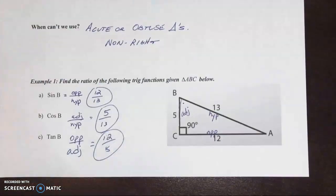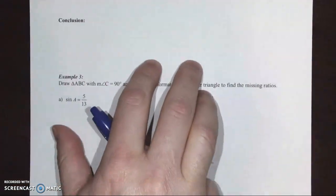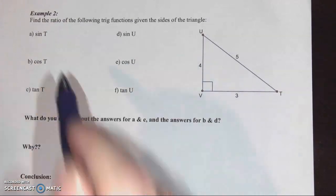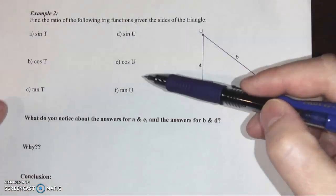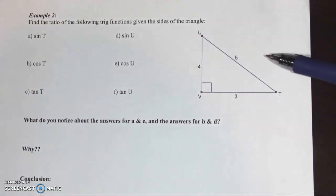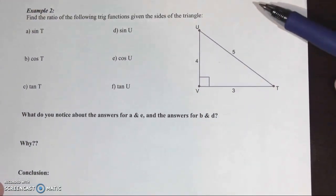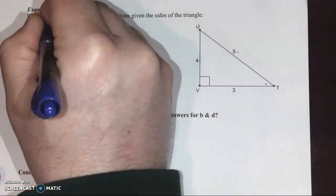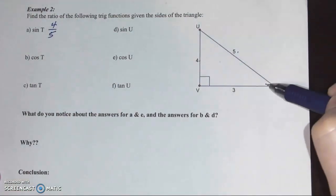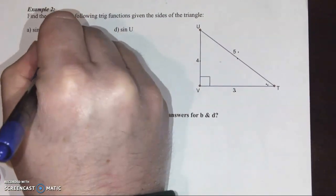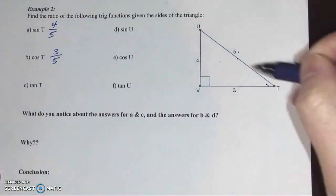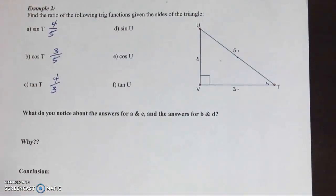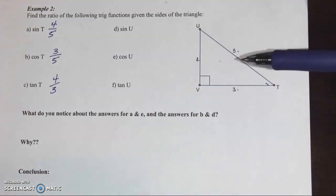Let's go to the next page and do a second example, and from this example we're going to see something interesting. We're asking for sine, cosine, and tangent from both acute angles of this right triangle. Sine of angle T: opposite over hypotenuse gives 4 over 5. Cosine of angle T: adjacent over hypotenuse gives 3 over 5. Tangent of T: opposite over adjacent gives 4 over 3. Pause the video and try D, E, and F, then play to see how you did.